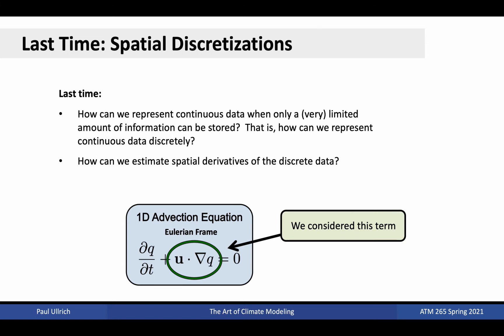In the last two lectures, we discussed spatial discretizations, which was most relevant for the derivative operators that appear in the fluid equations. Each of the spatial discretizations introduced a new way to represent continuous data in a discrete way and introduced a new way to estimate spatial derivatives over the discrete data. In the context of the advection equation, this was the spatial derivative term.